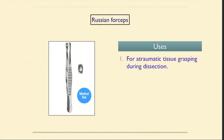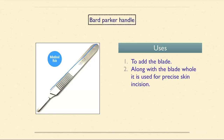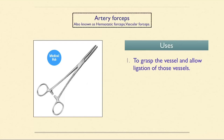The Burt Parker handle holds the blade — you can add different blades to the handle. Together, the handle and blade are used for precise skin incision. Artery forceps, also known as hemostatic or vascular forceps, are used to grasp vessels and allow ligation of those vessels.